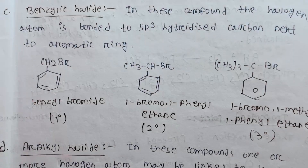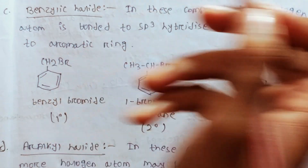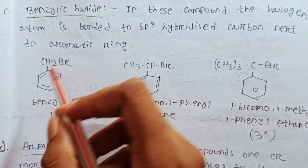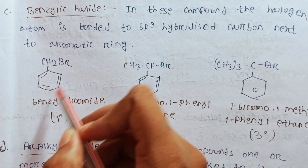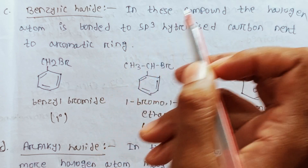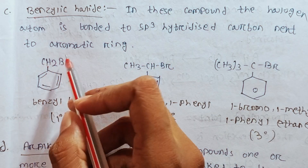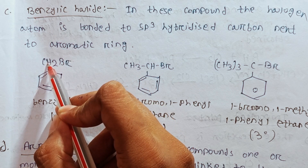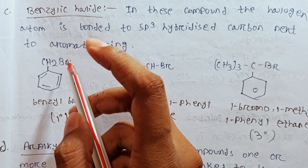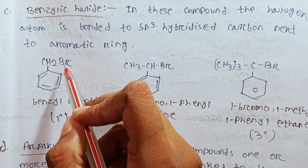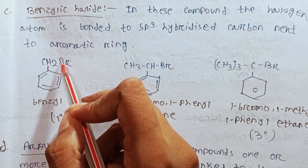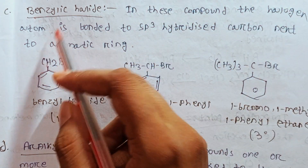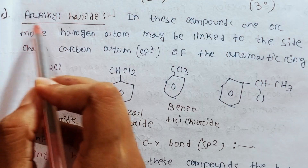Allylic halide, benzylic halide. Carbon next to the aromatic ring — that is what makes it a benzylic halide. In the halogen atom, it is carbon-saturated, and the carbon atom was sp3 hybridization. But in the halogen atom attached to a benzene ring, this is a benzene — it's an aryl alkyl halide.